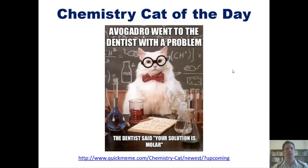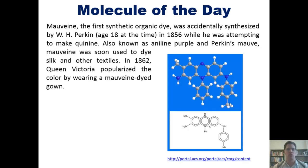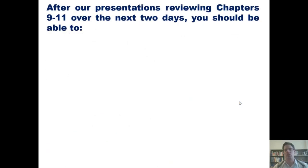I also want to share a cool molecule of the day from the American Chemical Society's molecular portal. This one is Mauveine, the first synthetic organic dye, accidentally synthesized by W.H. Perkin at age 18 in 1856 while attempting to make quinine — also known as aniline purple or Perkin's mauve. Mauve was used to dye silk and textiles, and in 1862 Queen Victoria popularized the color by wearing a Mauveine-dyed gown. Mauveine consists of as many as 12 molecules; the exact structures of Mauveine A and B were not determined until 1994, with other structures characterized from 1997 to 2008.